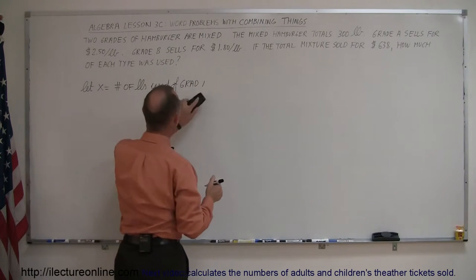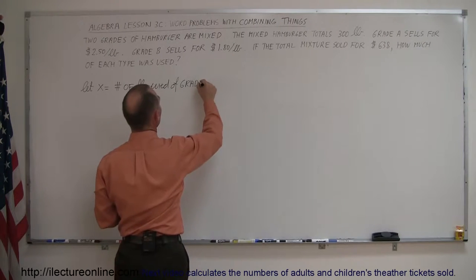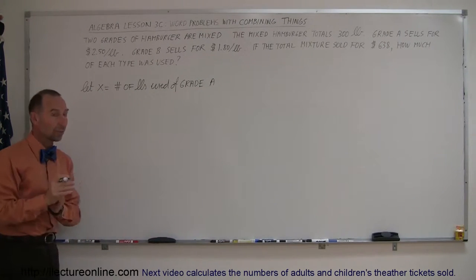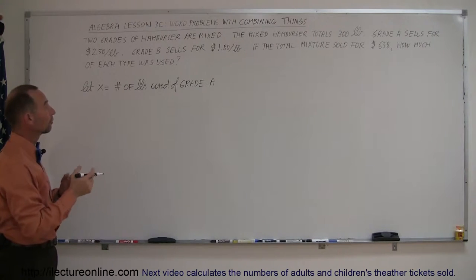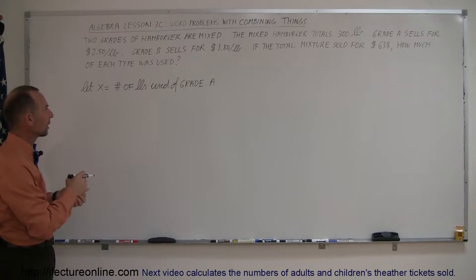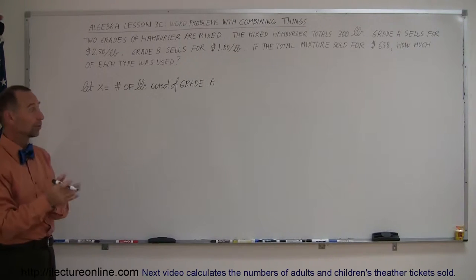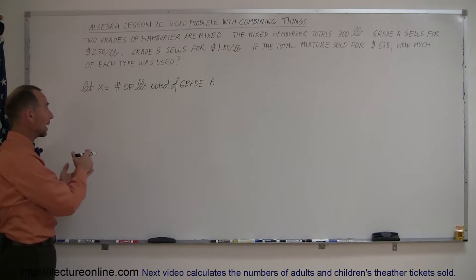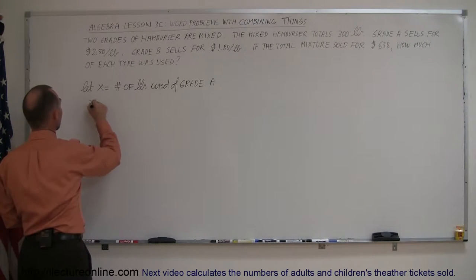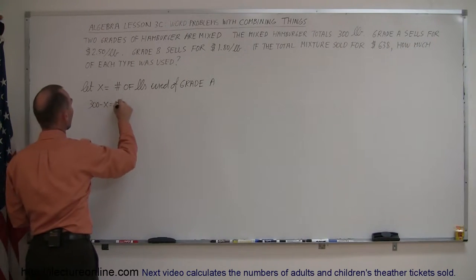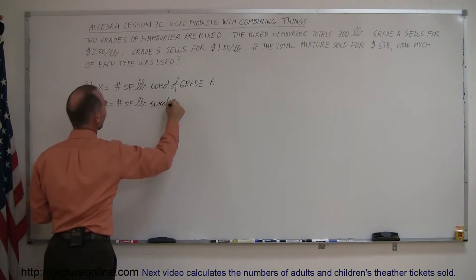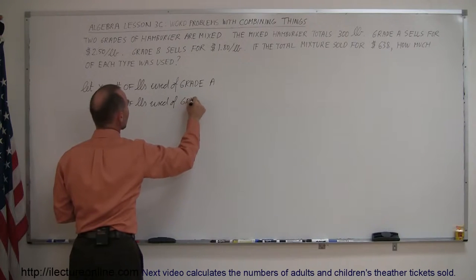Hamburger, grade A. Now, how do we express the amount of pounds used for grade B hamburger? Well, if the total is 300 and we used X for grade A, then 300 minus X is the amount for grade B. So, 300 minus X is the number of pounds used of grade B.